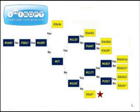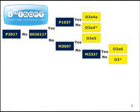We still need to see the path if you did not have P201. At this point, check the mutation identified by marker 002611. If positive, you are in subclade O3A4. For a more refined placement within this subclade, check your result for P103. A positive result places you within O3A4A, whereas a negative result means you are part of the O3A4 star lineage.